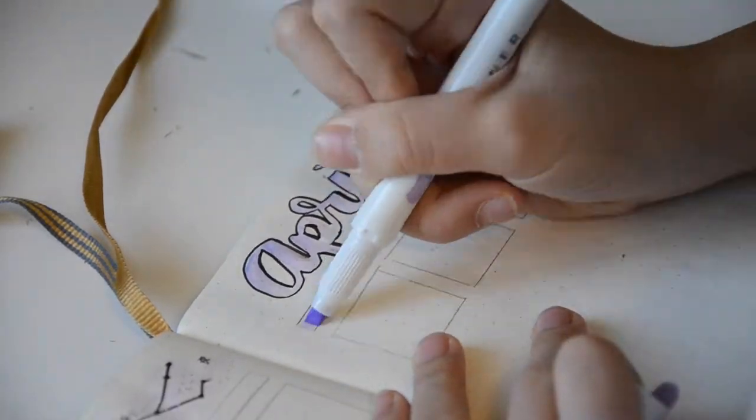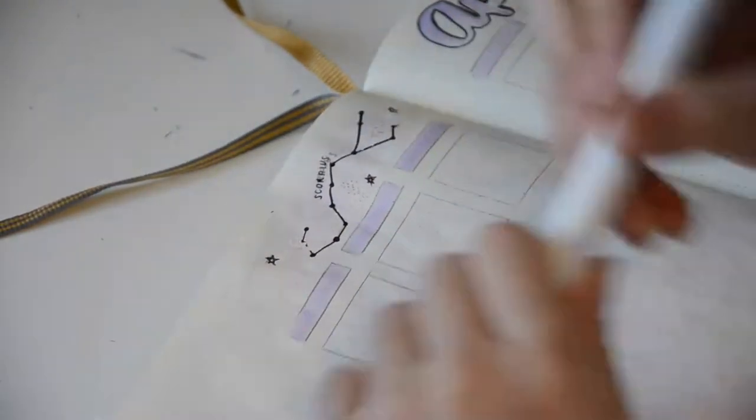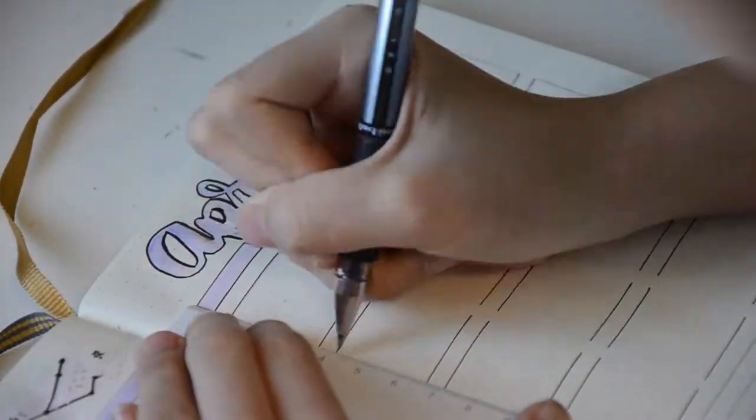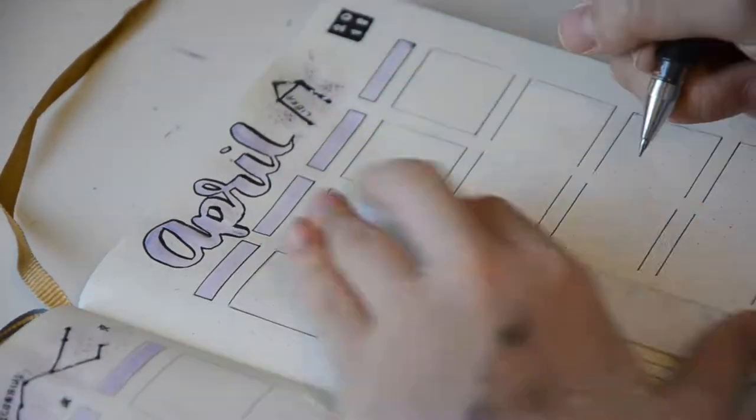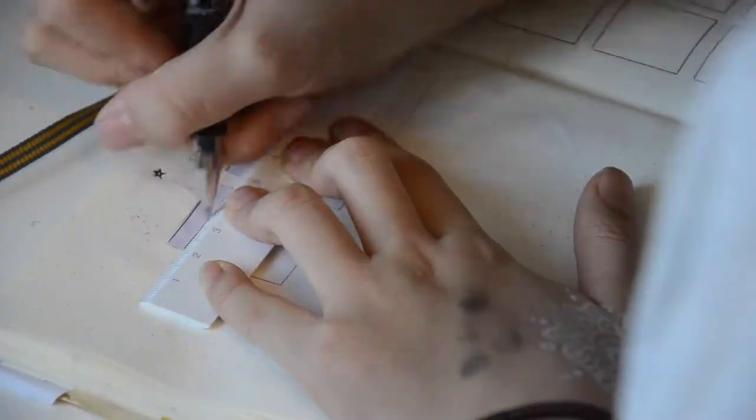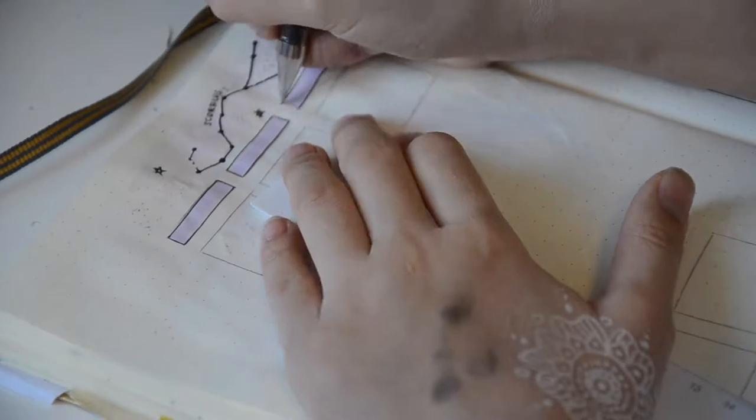I'm using a lilac Mildliner to fill in the rectangles for the days of the week, and outlining those rectangles with a black gel pen. I'm adding in 30 more boxes for the month, and I drew so many lines, you have no idea.